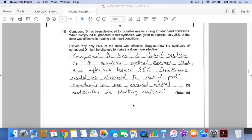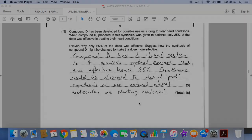So why is this drug only 25% effective? It's because compound D has two chiral centres. So there are four possible optical isomers. Only one's effective, one out of four, hence that 25%. How could you modify the synthesis to make it more effective? Well, I've gone for chiral pool synthesis, or you could use a natural chiral molecule as a starting material. You could use enzyme catalysis, anything like that.